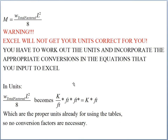We're going to calculate a moment that includes the total factored line distributed load: the imposed dead load times 1.2, the self-weight of the beam derived from stiffness sizing times 1.2, plus the live load times 1.6. So it's W_total_factored times L-squared over 8. Working out the units: W is in kips per foot, L-squared is foot times foot, one foot cancels, and we're left in kip-feet — which is the unit in which moment capacity is expressed. So no conversion factors are needed, but it's still important to go through this check.